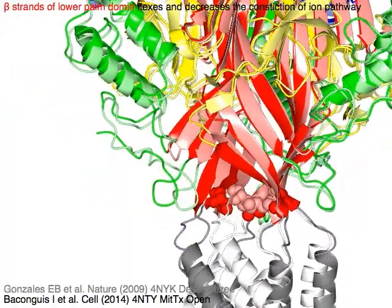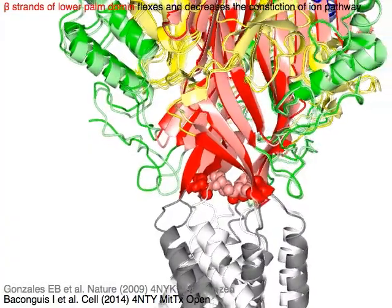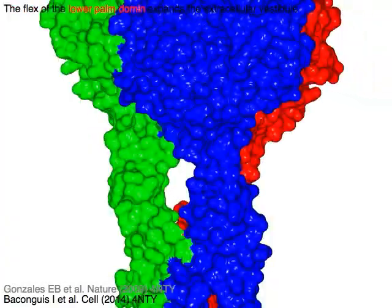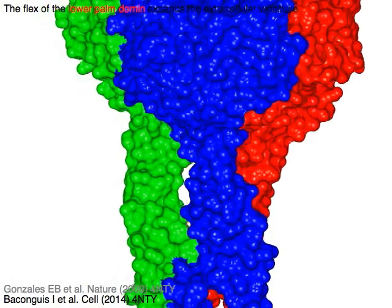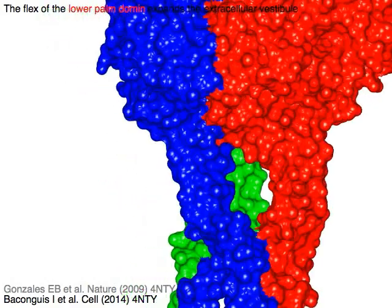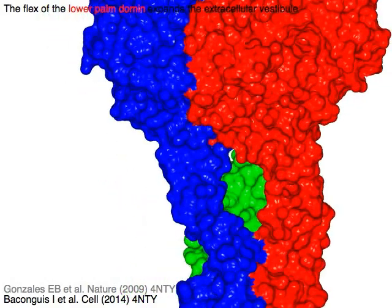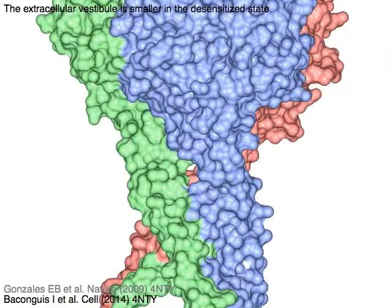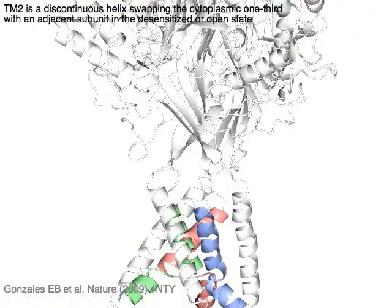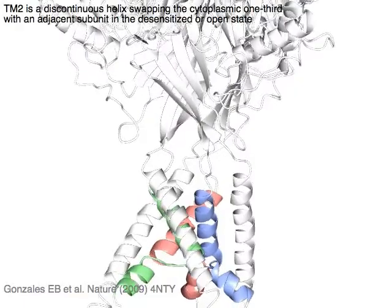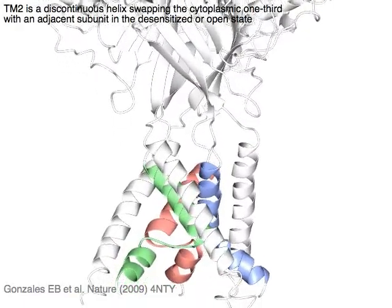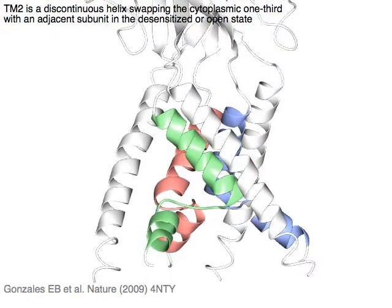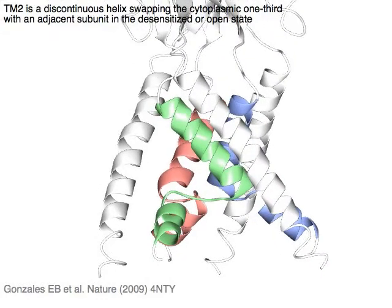Beta strands of the lower palm domain in red flex and decrease the constriction of the ion pathway. The flex of the lower palm domain expands the extracellular vestibule. The extracellular vestibule is smaller in the desensitized state. TM2 is a discontinuous helix, swapping the cytoplasmic one-third with an adjacent subunit in the desensitized or open state.